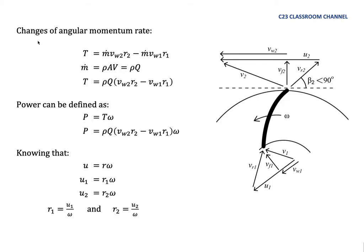And then we need to calculate the changes of angular momentum rate. So the torque here is the changes of angular momentum rate. So we deduct momentum rate at outlet minus momentum rate at inlet. Why do we deduct point 2 minus 1? Because this is a pump.